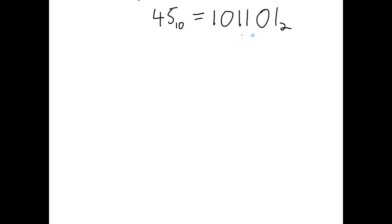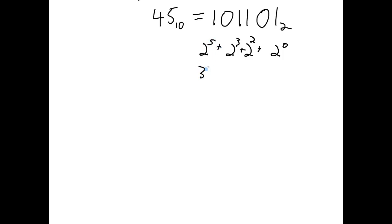As a check, I can convert this binary back into decimal form to verify I did everything correctly, using the sum of the weights. This equals 2 to the 0, plus 2 squared, plus 2 to the 3rd, plus 2 to the 5th — with the 2 to the 1st and 2 to the 4th positions being 0. So this is 32 plus 8 plus 4 plus 1, which equals 45. The conversion was done correctly.